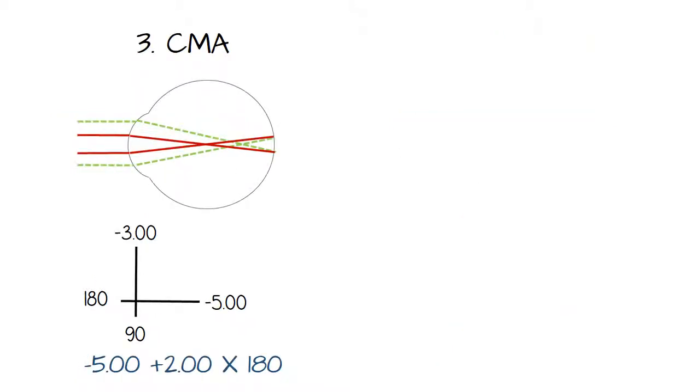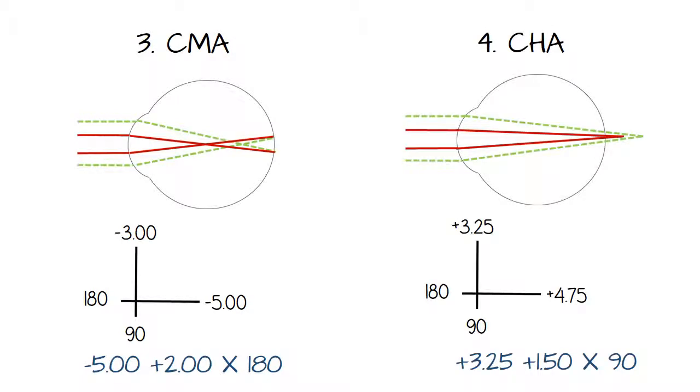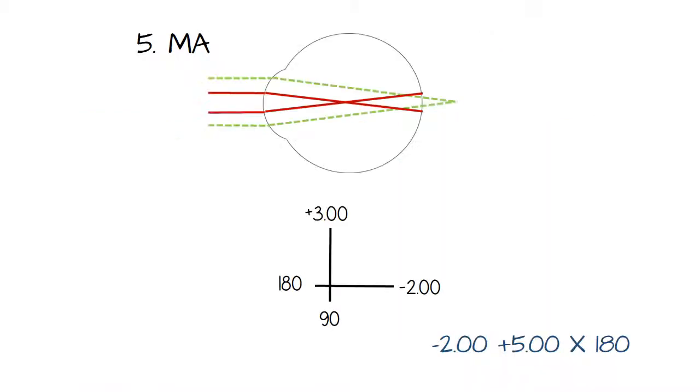So following along, the compound myopia would require two negatives, the compound hyperopia would require two positives, and the mix would require a negative and a positive.